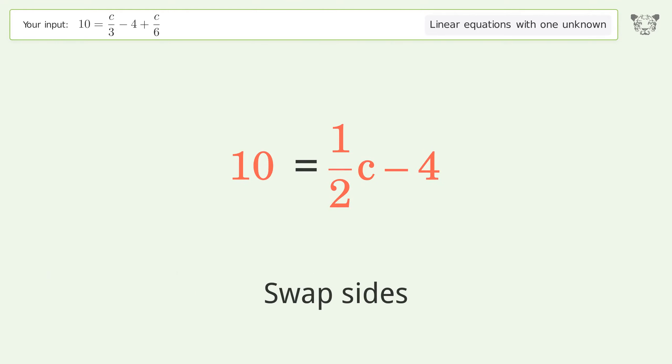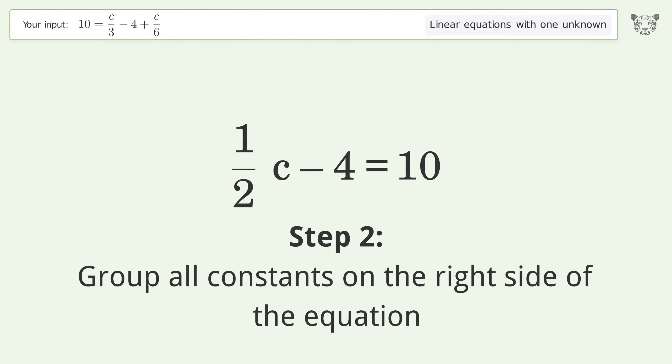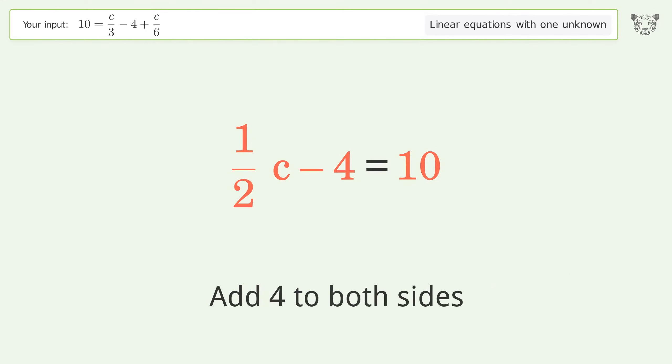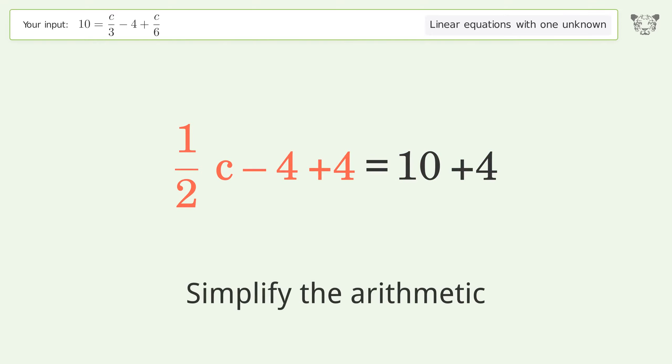Swap sides. Group all constants on the right side of the equation. Add 4 to both sides. Simplify the arithmetic.